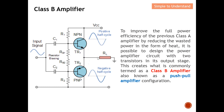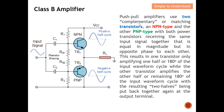You can see how they get the name push-pull amplifier — you push it and then you pull it. The push-pull amplifier uses two complementary or matching transistors: one NPN type and one PNP type. Both power transistors receive the same input signal, equal in magnitude but in opposite phase to each other. When the input signal is on the positive half cycle, the NPN transistor takes care of it.